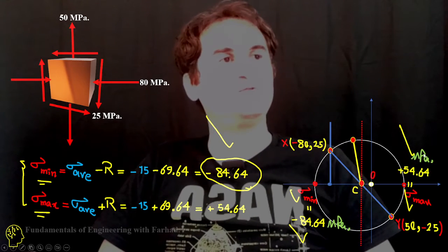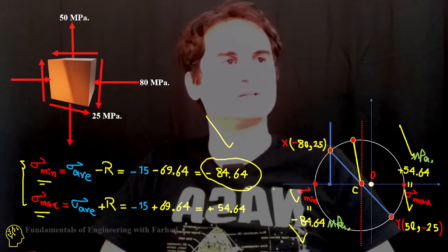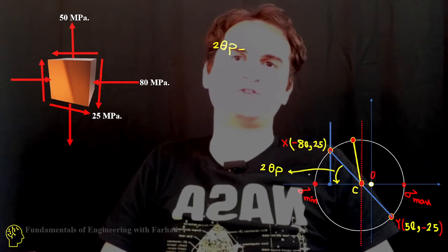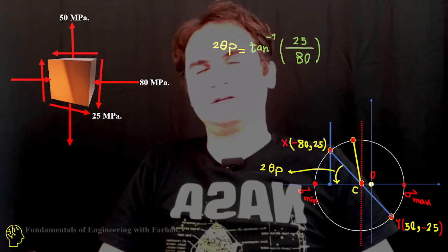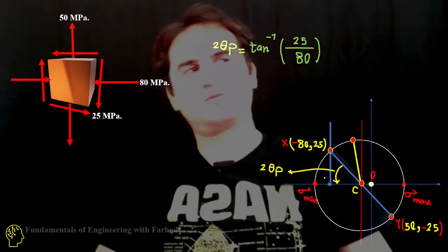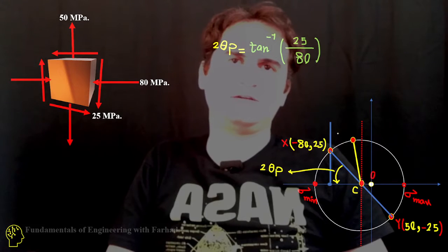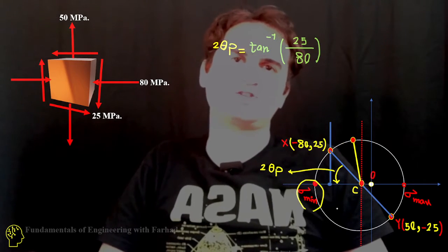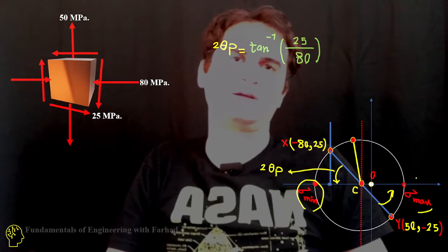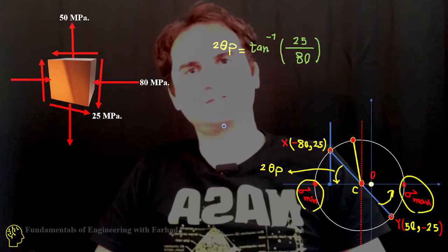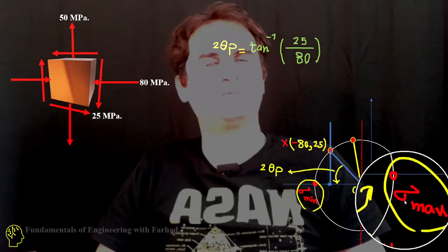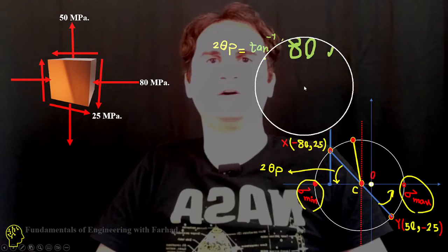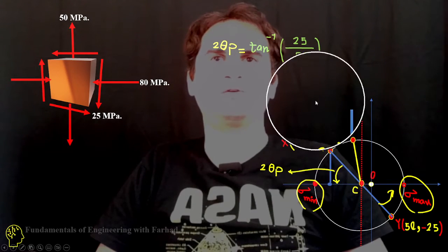As soon as we know what are the numeric values of our principals, we want to know what are their planes. If we just make a counterclockwise turn from our sample, we can easily reach to sigma minimum. Likewise, if we just turn the other part. So that's our extremums, either minimum, maximum, or principal. Two times theta p is tangent inverse of 25 over 80.